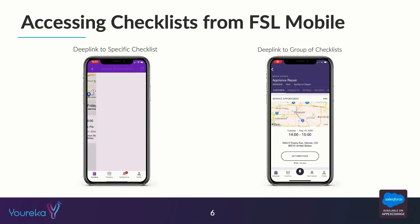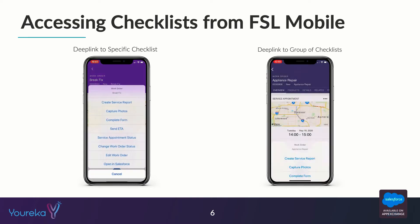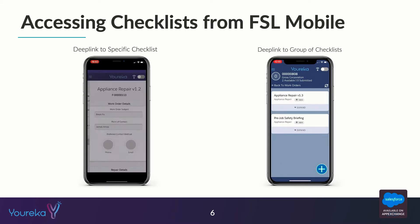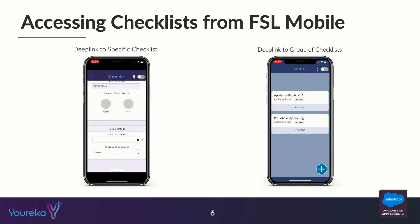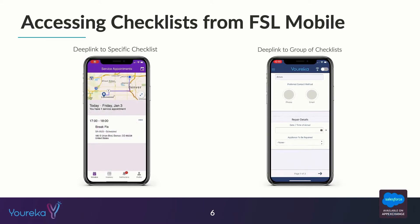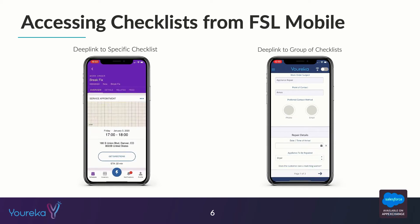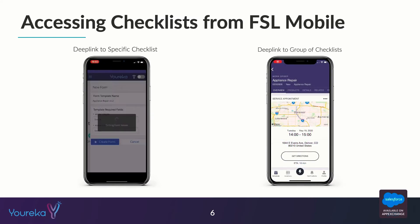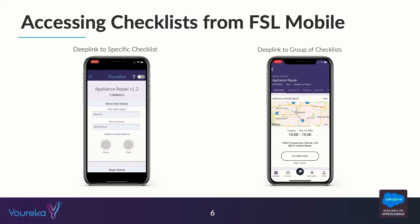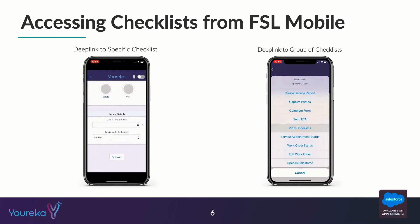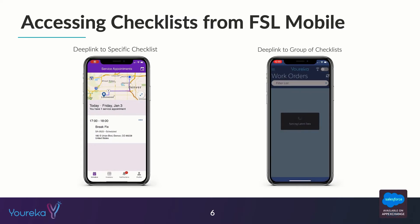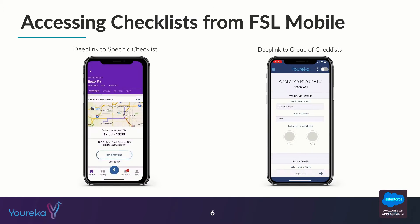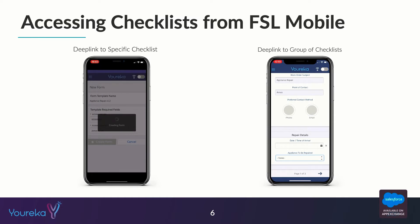Here are some examples of what it looks like to access checklists from FSL mobile. On the left, we can deep link directly to a specific checklist, which is great if you have the same checklist to fill out every time. But that's not today's requirement. Today we need to go to a group of checklists, so on the right you can see that clicking a button inside FSL mobile takes us to a list of checklists that users can pick from and then fill out.